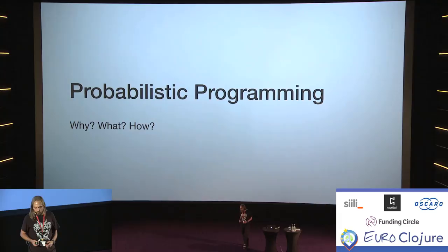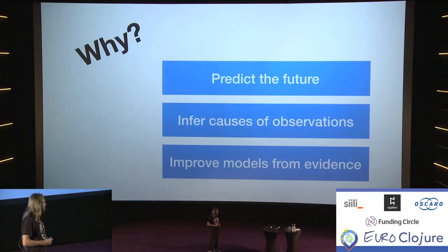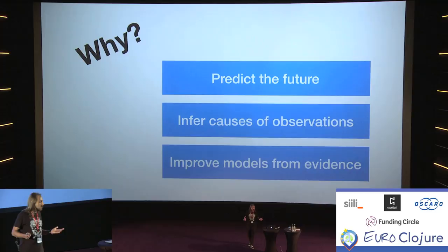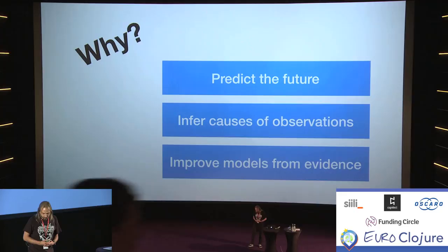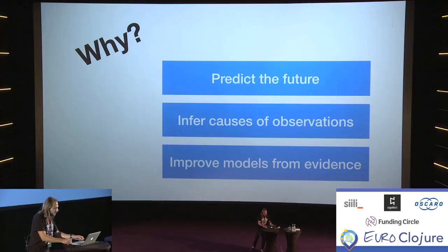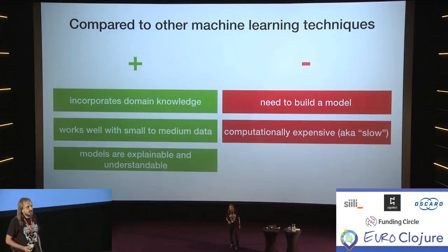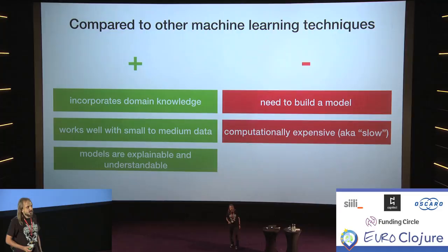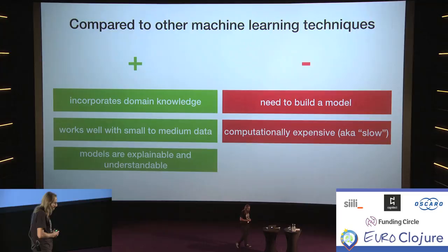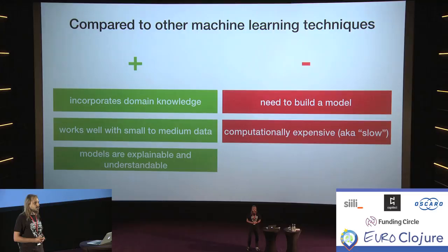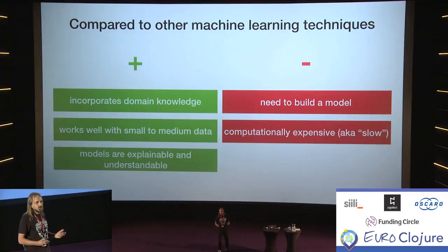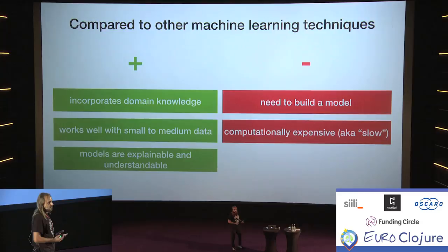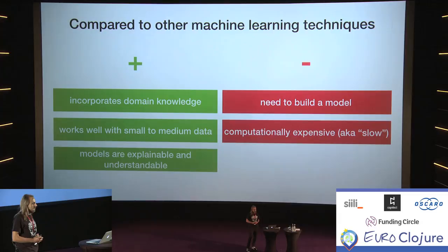Probabilistic programming: why would you want to use it, what is it, and how does it work? First, you might want to predict the future from your model. Given observations, you want to explain what caused them. And then you want to incorporate data to improve your model for future use. One key pro is that it allows you to incorporate domain knowledge. If you have a problem where you already have a good model — say in physics or astronomy, where you have very good models of how planets move — you can leverage that for your predictions. That's a strong pro.